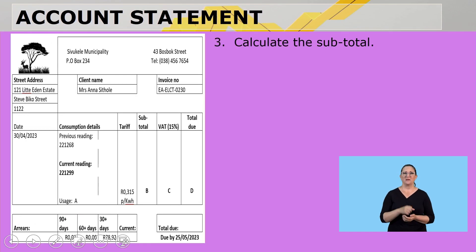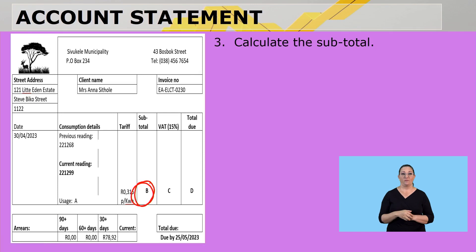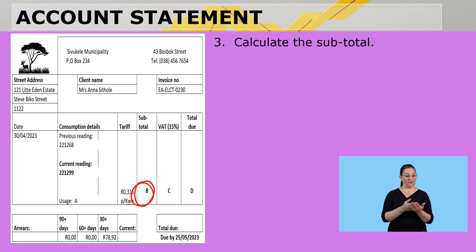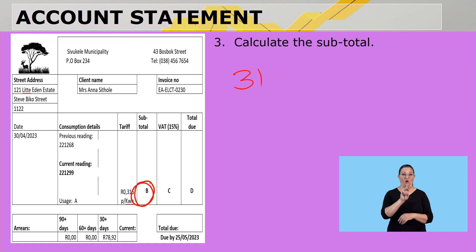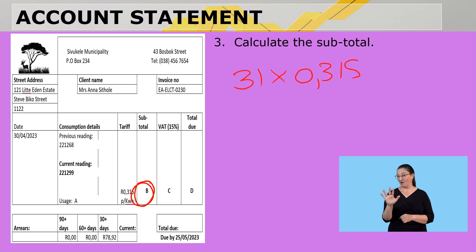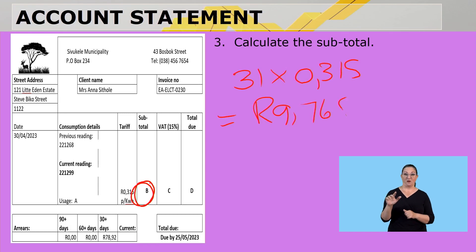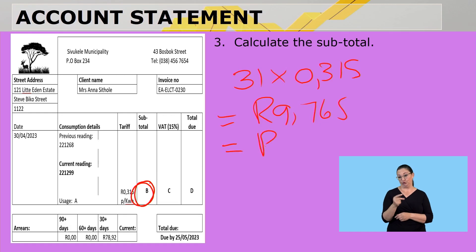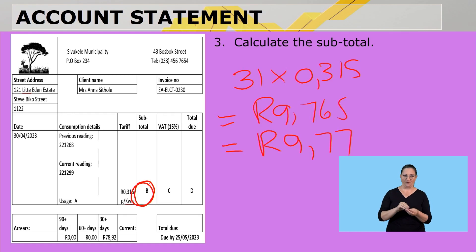Calculate the subtotal. The subtotal, B, is the cost for the electricity. We calculated that they used 31 kilowatt hours times the rate 0,315, which gives us 9,765. Because it's money, we round to two decimal places, so it's R9,77. That is the subtotal.